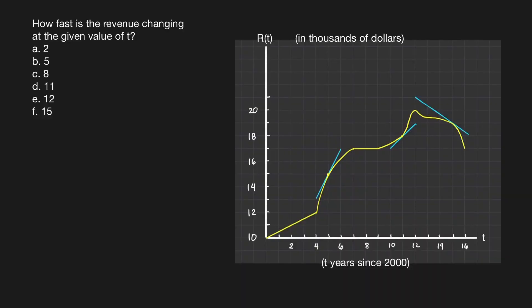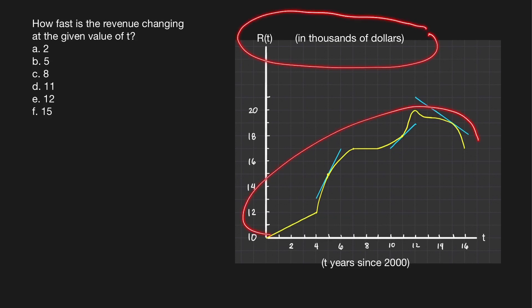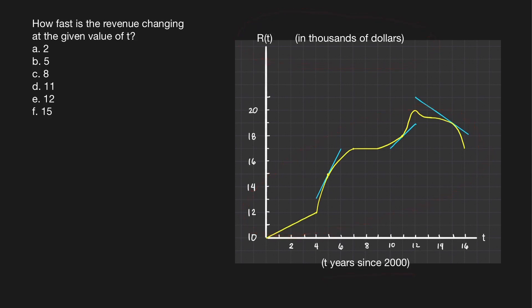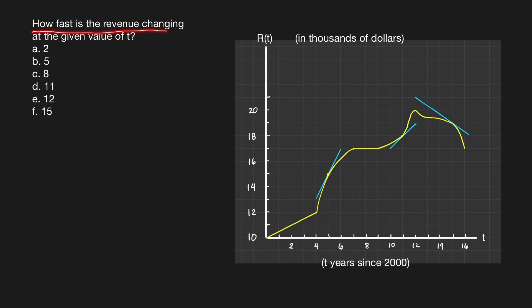In this video, we're going to talk about instantaneous rate of change and discuss an example in business and economics. Suppose we have a company whose revenue in thousands of dollars is represented by this yellow graph, T years since year 2000. These blue lines are tangent lines at three points. How fast is the revenue changing at the given value of T?